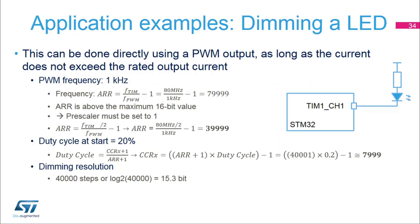This slide shows a simple practical example of PWM usage for dimming a low power LED. The first step is to program the frequency to 1 kHz. With no prescaler and a timer operating frequency of 80 MHz, the ARR value obtained is 79999, which is above the 16-bit range usable with timer 1. The timer prescaler must be set to 1 to have the timer operating at 40 MHz, resulting in a valid ARR value of 39999. The second step computes the compare register value for a 20% duty cycle, yielding a value of 7999. The dimming resolution with a timer running at 40 MHz gives 40,000 dimming steps, corresponding to an equivalent resolution of 15.3 bits.